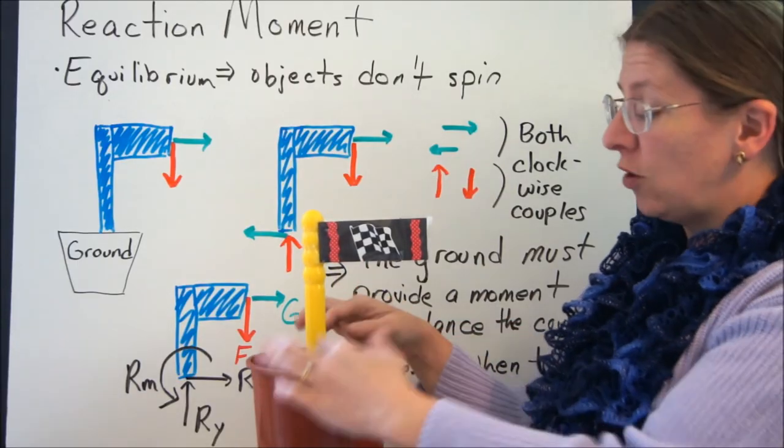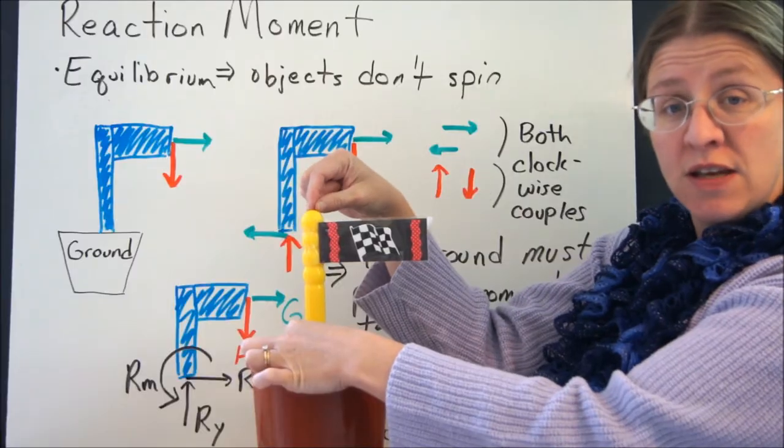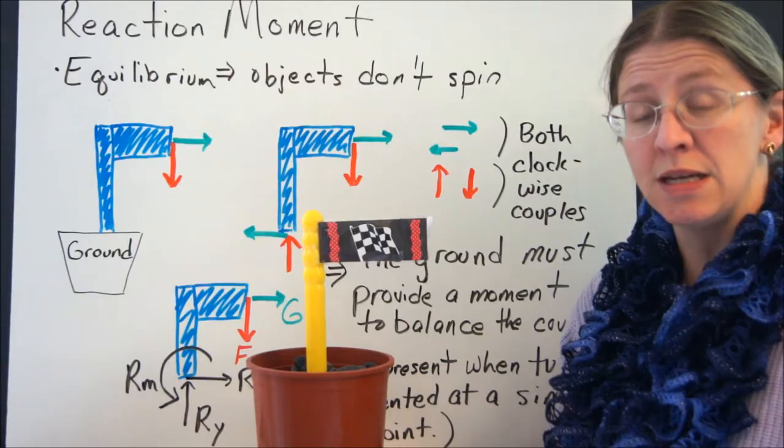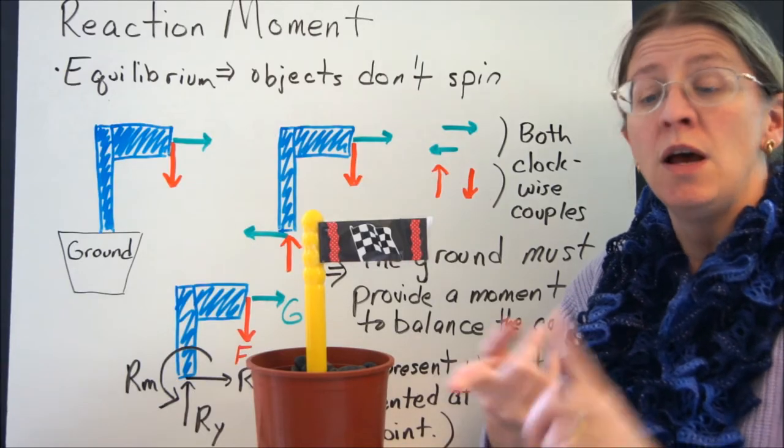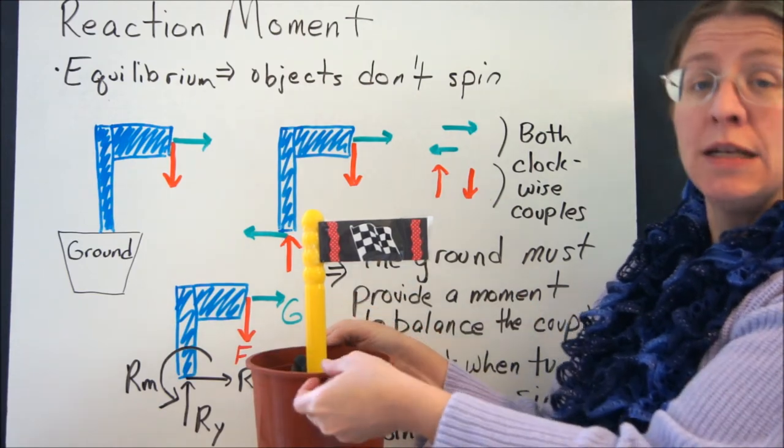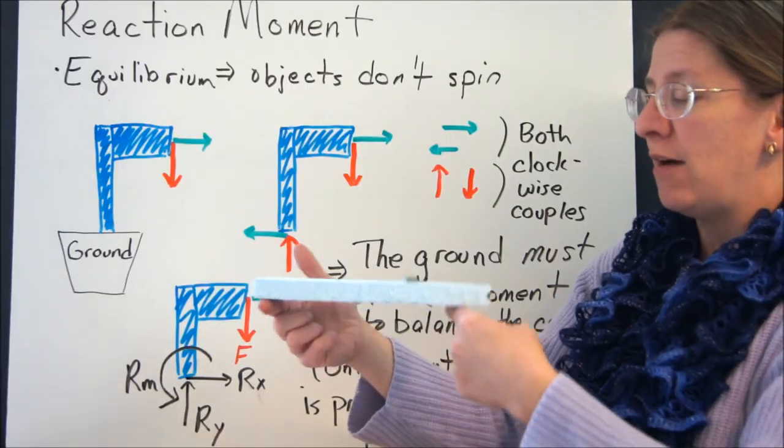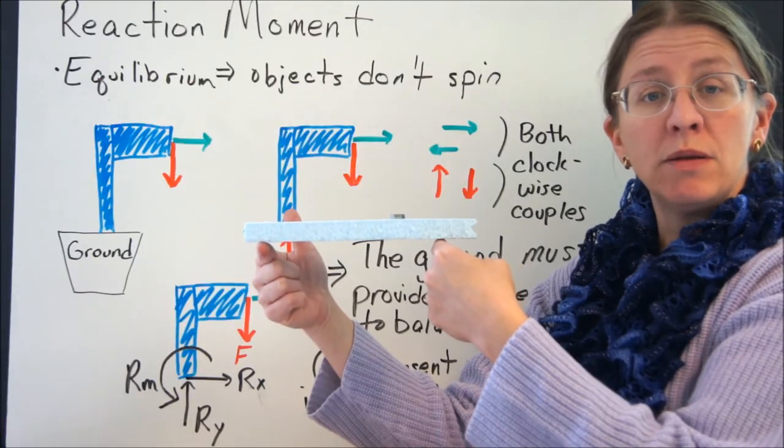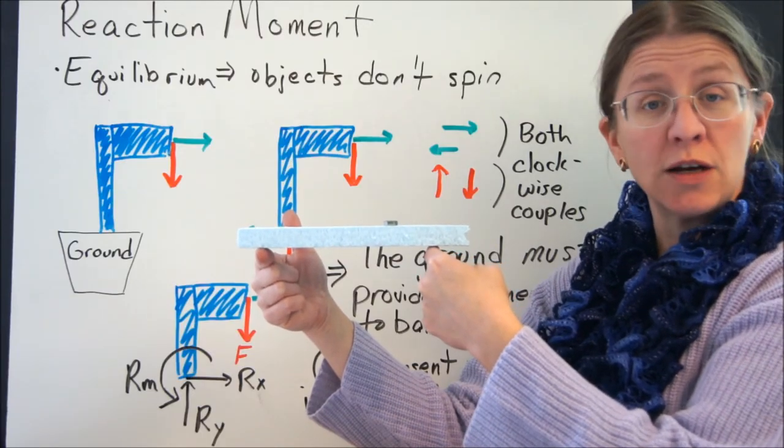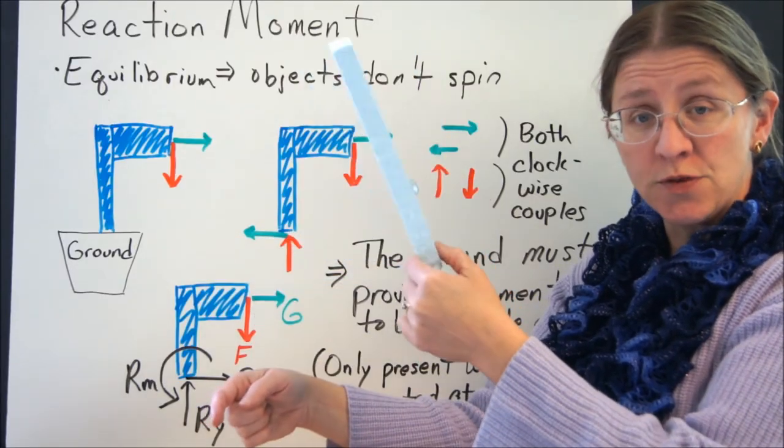Now this is only true when the ground itself is a single point. We're going to consider just this yellow object. The ground all by itself is resisting the tendency to move right and left, up and down, and to rotate. So that single point is resisting a tendency to rotate. That's different than if I have this beam that's supported at two places. Two places like this, the beam all by itself is not going to rotate. But neither support individually is keeping this from rotating.